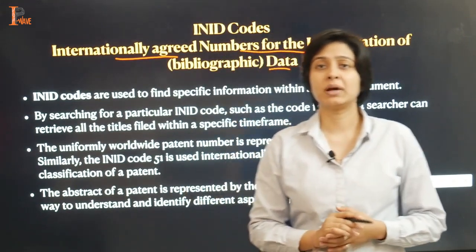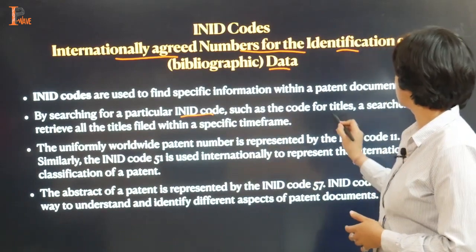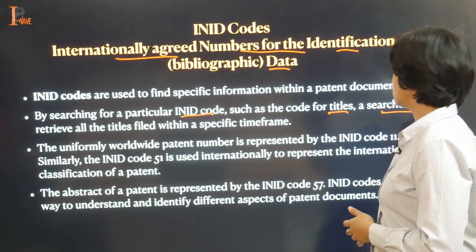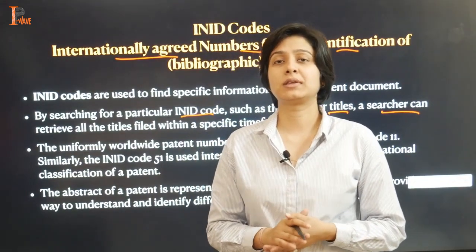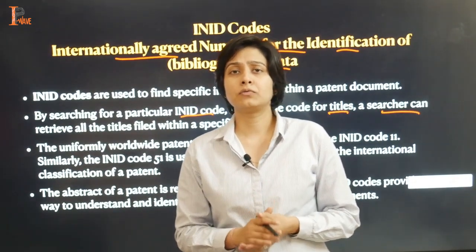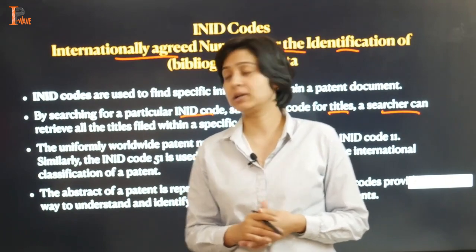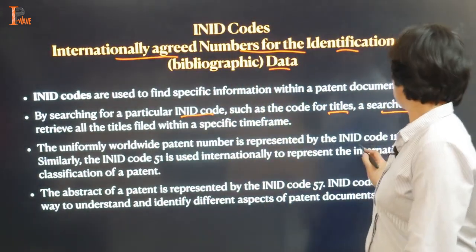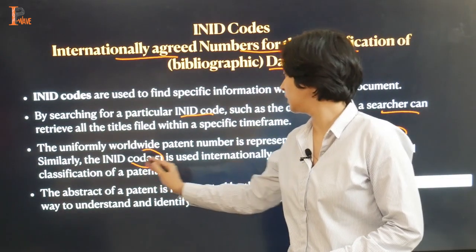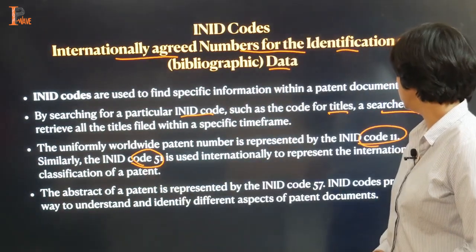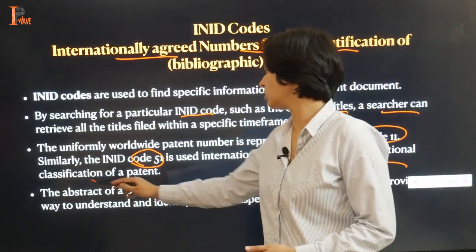By searching for a particular INID code, such as the code for titles, a searcher can retrieve all the titles filed within a specific timeframe. The uniformly worldwide patent number is represented by INID code 11. Similarly, INID code 51 is used internationally to represent the international classification of a patent.